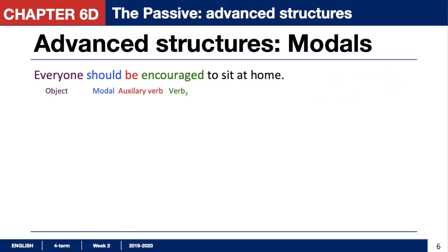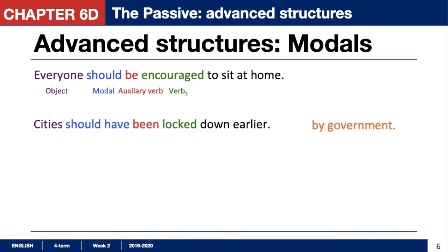Another example is: 'Cities should have been locked down earlier.' Subject here is by the government — again not important. We have 'cities' as the object, 'should have' — here 'should' is the modal verb, and when we have past modals with 'should plus have plus verb 3,' in this situation we say: past modal plus auxiliary 'been' — because it's past, 'be' changes to 'been' — and we have 'locked,' verb 3. So there are two possible variants for advanced structures with modals: in the present tense and in the past.